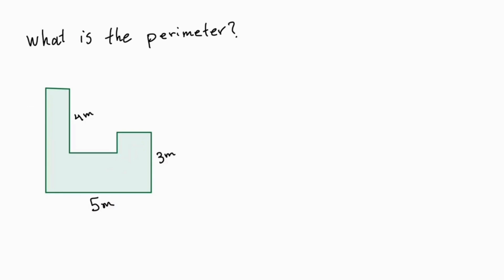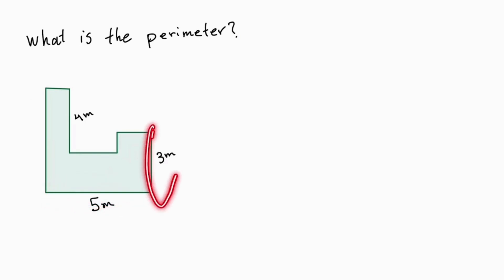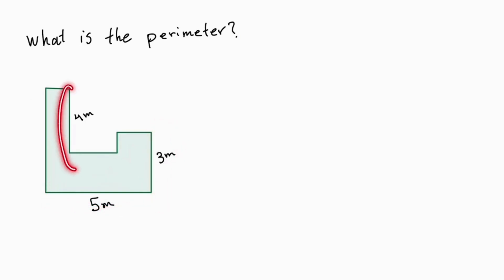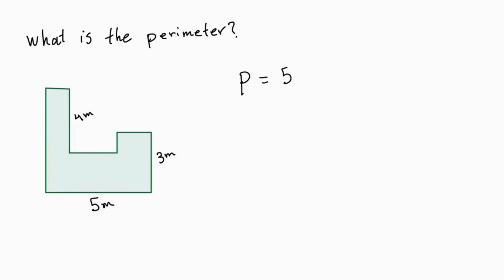So let's start with the easy ones. We already know that this side is 5, this side is 3, and this one is 4. So let's write P is equal to 5 plus 3 plus 4.